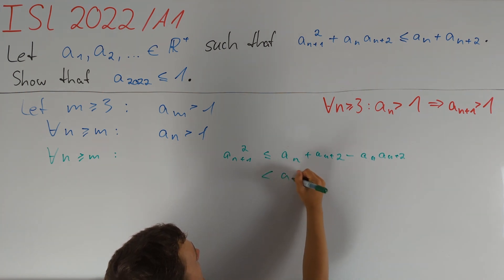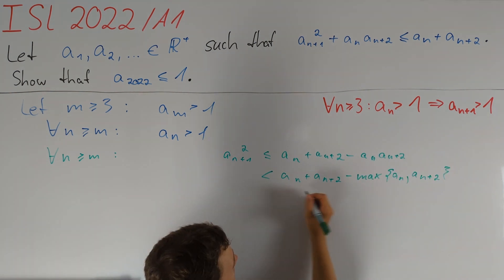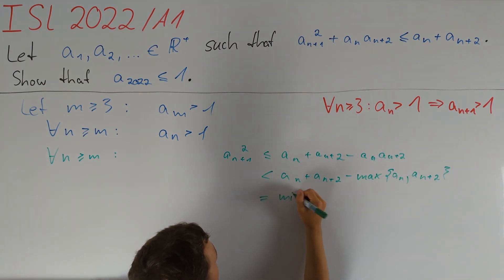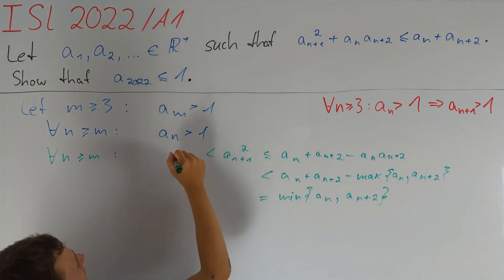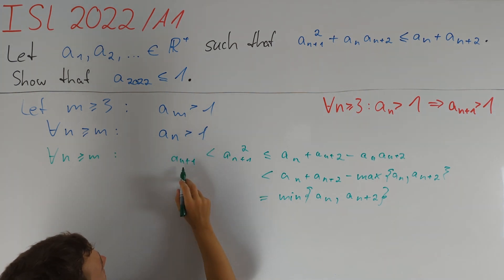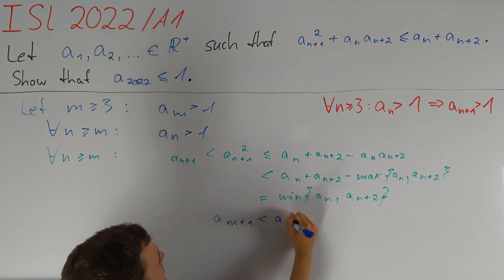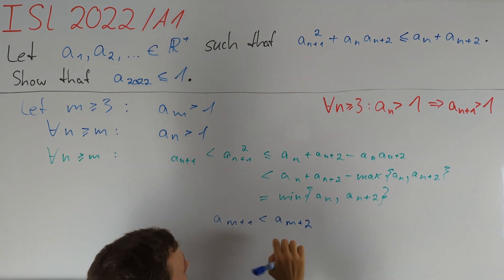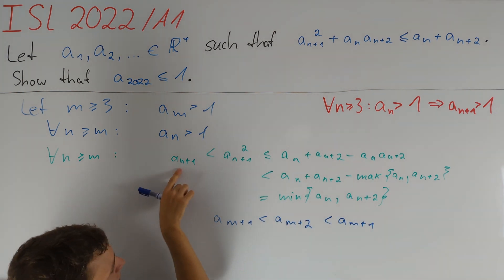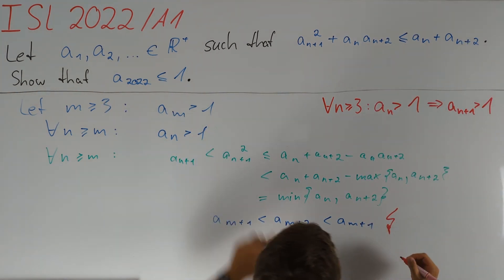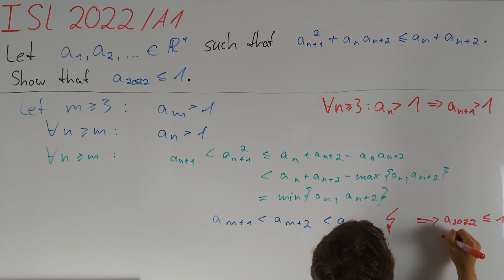In other words, all of this is less than aₙ plus aₙ₊₂ minus their maximum, which equals the minimum of aₙ and aₙ₊₂. Since aₙ₊₁ > 1, the right side is also greater than aₙ₊₁. This is enough to get a contradiction: we obtain aₙ₊₁ < aₙ₊₂ by applying the inequality at m, and aₙ₊₂ < aₙ₊₁ by applying it at m plus one. Therefore our assumption was wrong, and we obtain that a₂₀₂₂ is less than or equal to one.